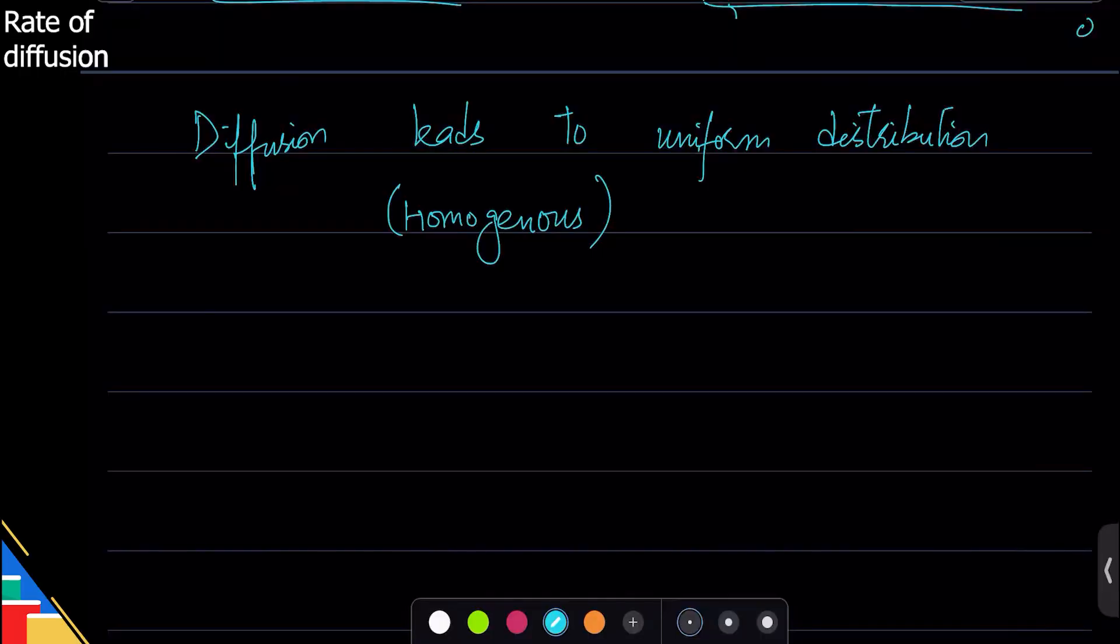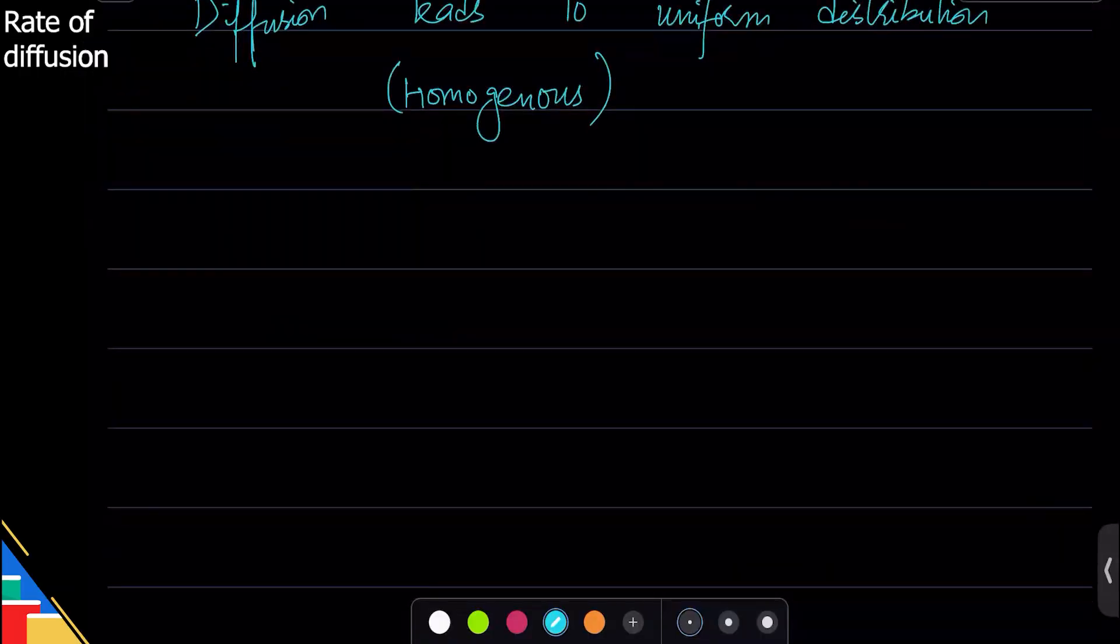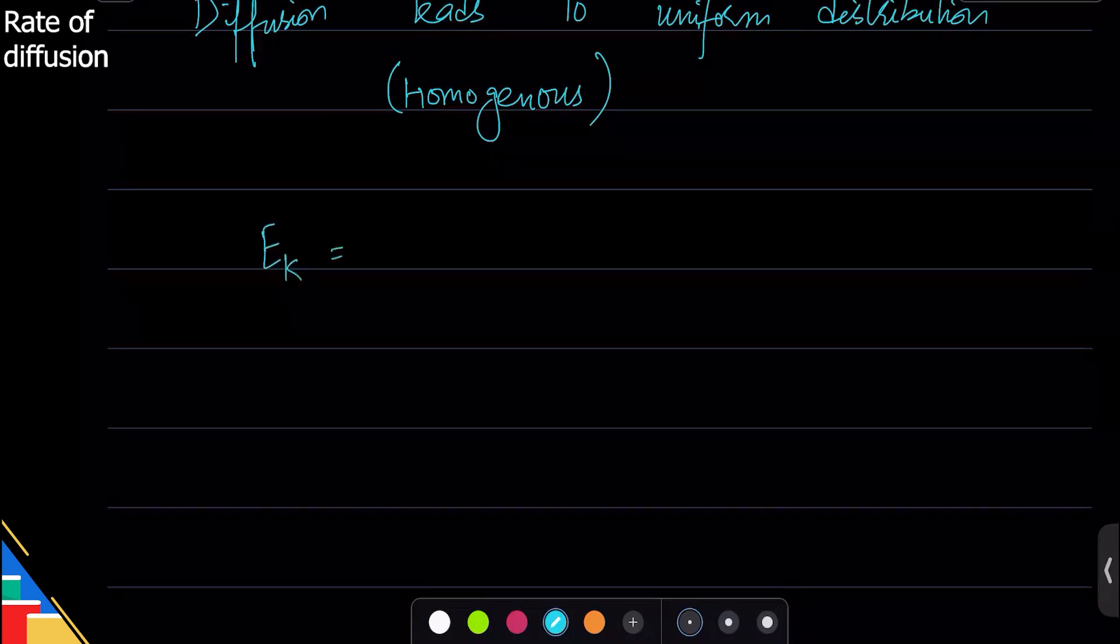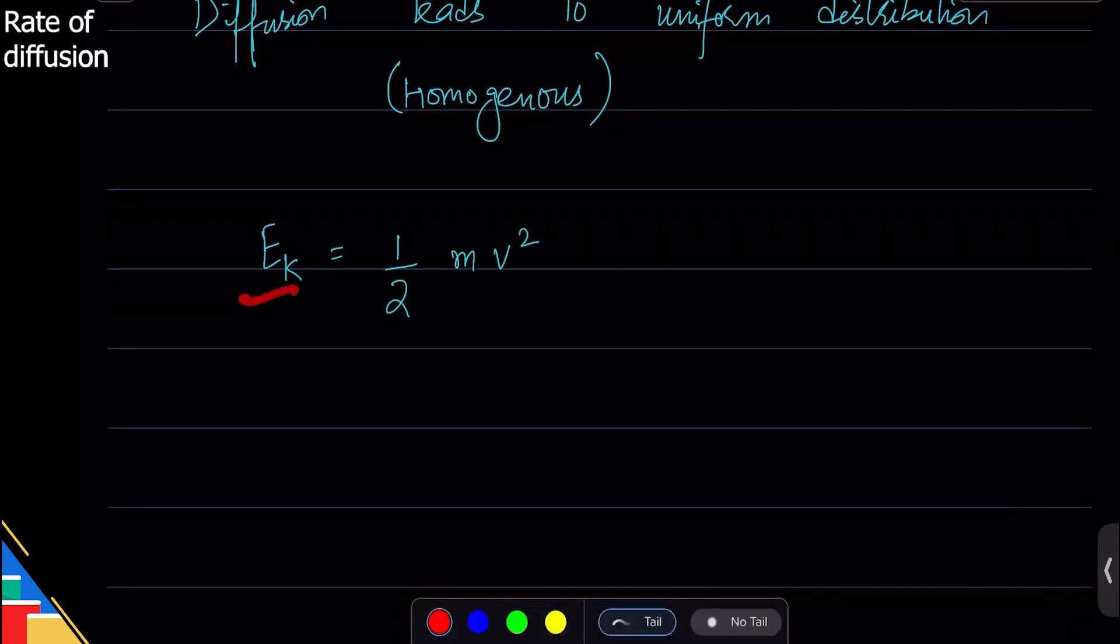So in physics there's a formula for kinetic energy. Kinetic energy is half m v squared. So in this one we can see that kinetic energy depends on mass and speed. Now let me divide everything by m, so that will cancel this m out.